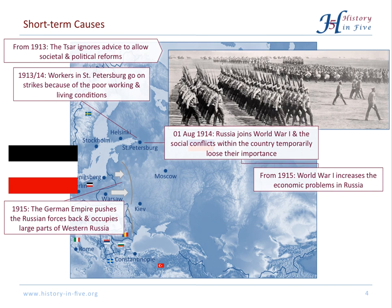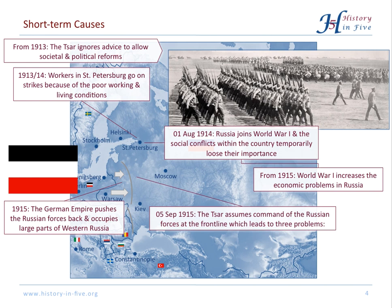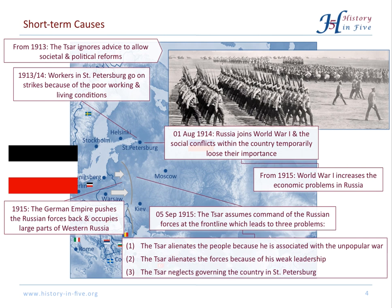The Tsar decided to assume command of the forces at the front line, and that led to three massive problems. The people didn't like the Tsar anymore because now he was associated with this unpopular war. The Tsar was a very poor military leader, so there was an alienation between him and the forces. Furthermore, if the Tsar is on the front line and not in St. Petersburg, how should he govern the country?